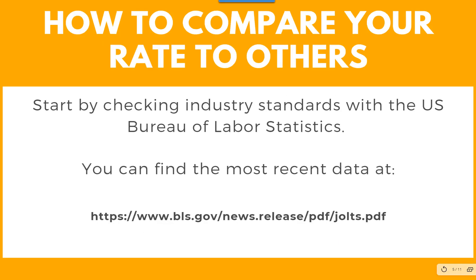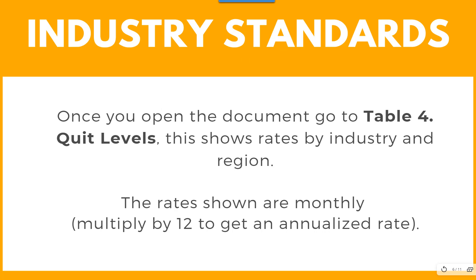Once you get your rate, you want to understand how you compare to others in your industry. To start that process, you begin by checking the industry standards in the U.S. Bureau of Labor Statistics — you can find the most recent data at their website. Once you open the document, go to Table 4 and look at Quit Levels. This shows the rates by industry and by region. Remember, the rates shown are monthly, so multiply those numbers by 12 to get the annualized rates if you're comparing to your annualized rate.